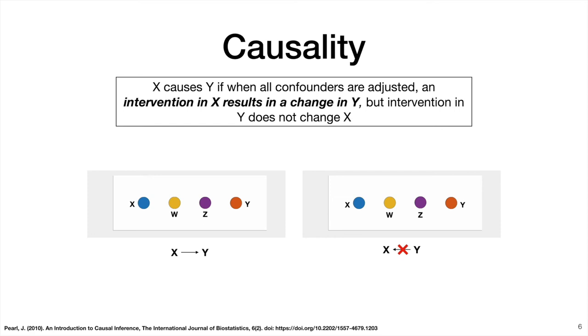So this whole video is supposedly an introduction on causality. And I have not defined what it is. There are a few ways we can define causality. The one I like is x causes y if when all confounders are adjusted, an intervention in x results in the change in y. But an intervention in y does not necessarily change x. So I have a little cartoon here. Let's say we have four variables x, w, z, and y. If we intervene in x, that means we jiggle it a bit. If x causes y, we'll see y jiggle as well. However, if x causes y, but y does not cause x, if we intervene in y, that is we jiggle y a bit, x will not respond. So that's causality. It is fundamentally asymmetric.